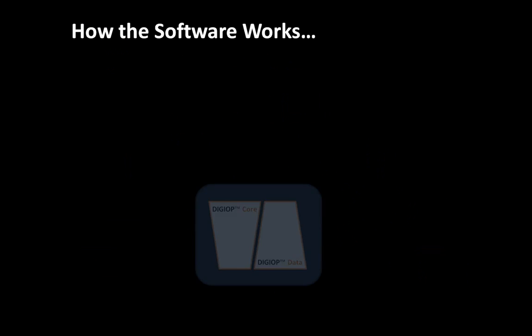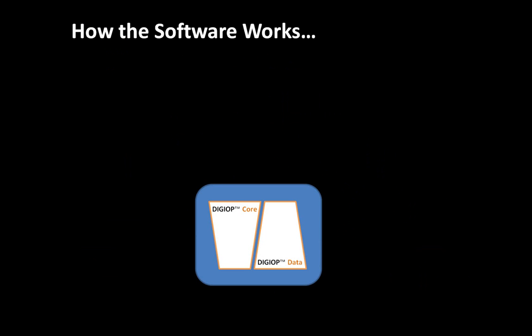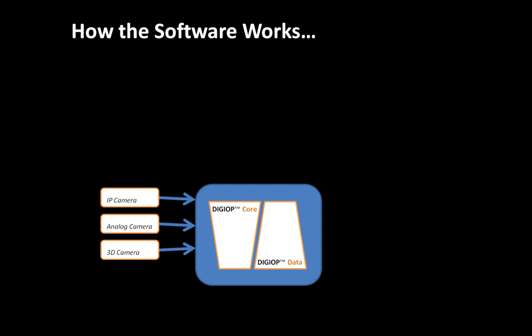Let's look at how DigiOp Elements works. Our extensible video recording software, DigiOp Core, works in tandem with DigiOp Data on a DigiOp system or your server. Video from sources including IP and analog cameras, DigiOp's new 3D analytics camera, and IP encoders gets recorded by DigiOp Core.